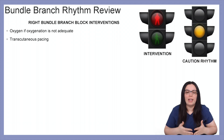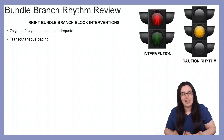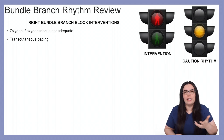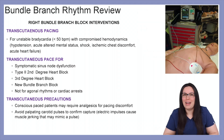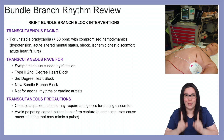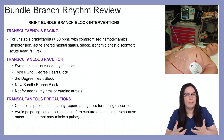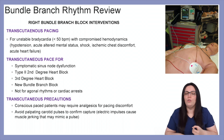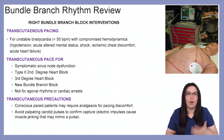Interventions with these right bundle branch blocks include oxygenation if oxygenation is not appropriate, and we may even need to consider transcutaneous pacing if they're causing a lot of problems. Transcutaneous pacing is not fun for our patients, especially our conscious patients. It is indicated for unstable bradycardias that are less than 50 beats per minute with some kind of compromised hemodynamics — that could be hypotension, acute altered mental status changes, shock, ischemic chest discomfort, as well as acute heart failure patients.